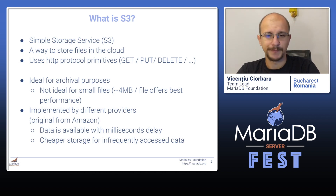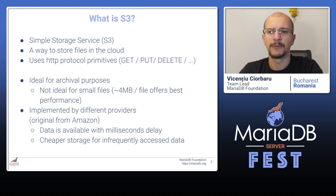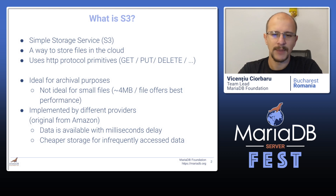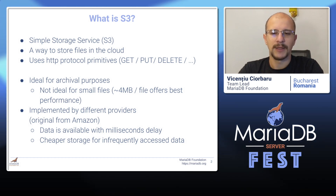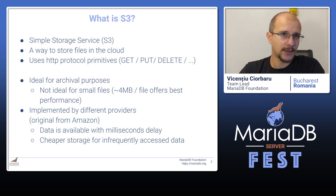This is important because if you want to access your data, especially if it's spread out around small files, you're going to incur a lot of performance overhead, namely with the network transactions. This sort of service is implemented by many different providers. The original specification came from Amazon with the goal of providing data with millisecond delay and cheaper storage overall, especially if you access your data less frequently.